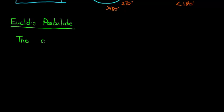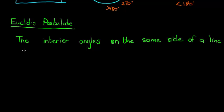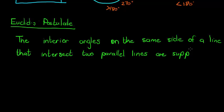And I'll write it here. The interior angles on the same side of a line that intersects two parallel lines are supplementary. Now I haven't told you what supplementary is yet, but supplementary means they add up to 180 degrees.